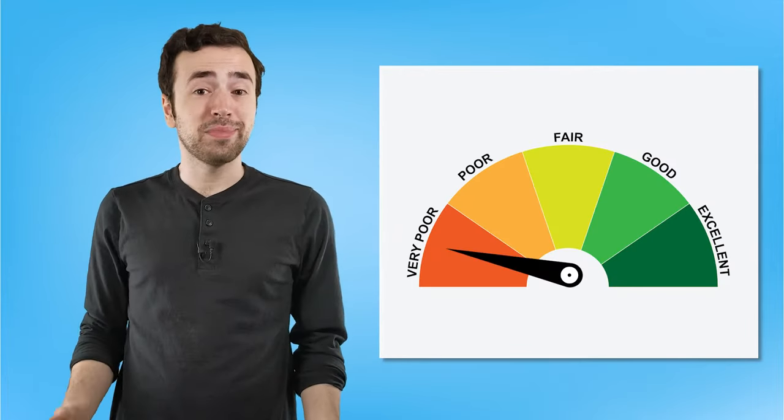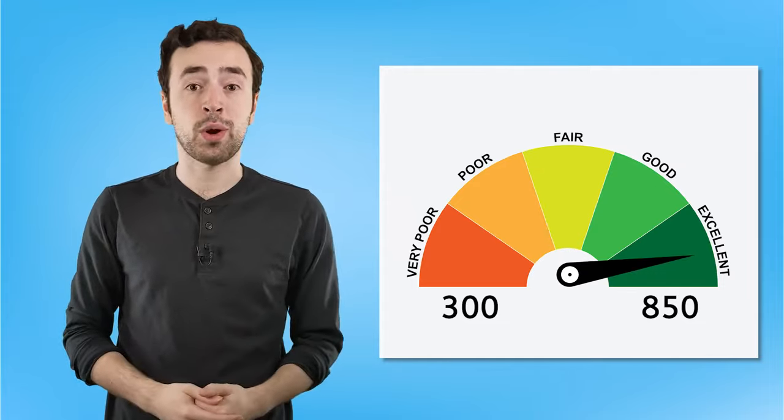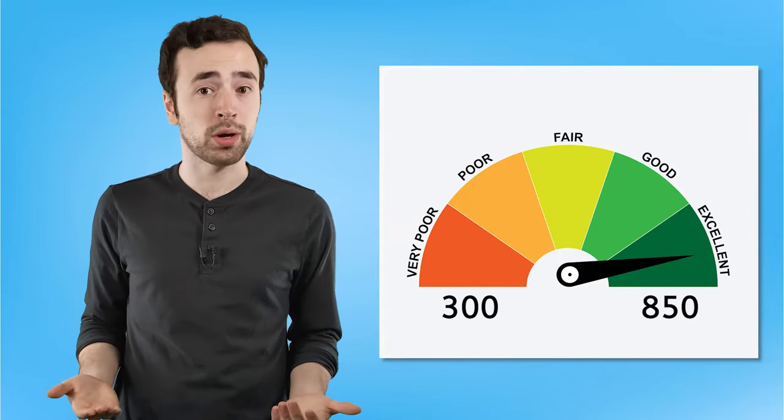Your credit score itself is just a number. It's on a range between 300 and 850, where the bigger the number, the better your score. How your credit score is actually calculated will depend on the bureau and the credit scoring model. But to give you some more insight into this, let's check out how FICO calculates your credit score.